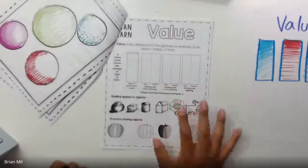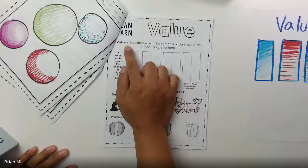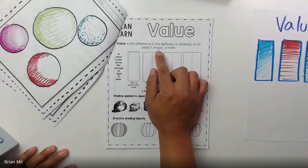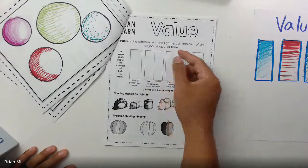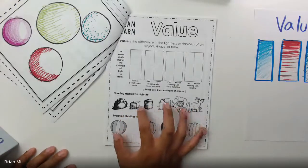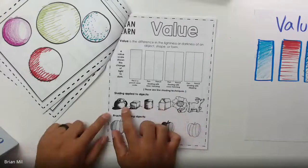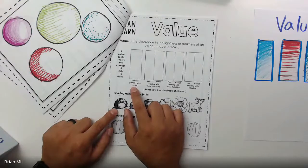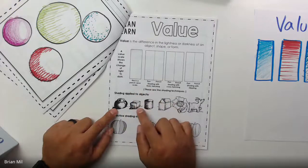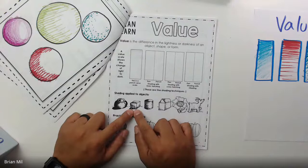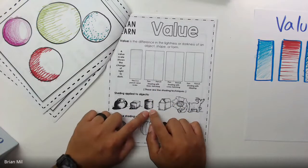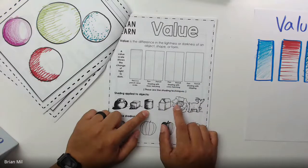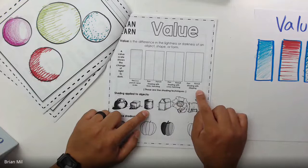Step number one. Let's read off what value is about. So value is the difference in the lightness or darkness of an object, shape, or form. So if we skip down to this section right here, I'm going to tell you guys what these examples are for. The first one is a pot, and this is going to be an example for a pencil value scale. The next one, this cube, will be an example for hatching.